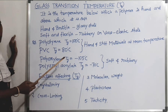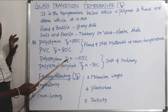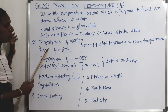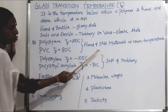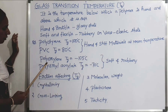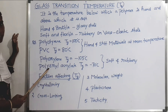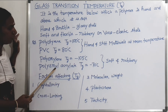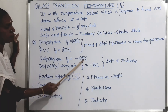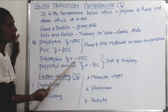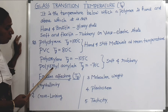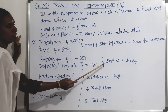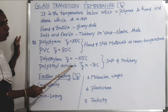The glass transition temperature decides whether a polymer behaves as a hard material or soft material. Polystyrene and PVC are denoted as hard and stiff materials. The next examples are polyethylene and polyethyl acrylate, which are low density polymers. For polyethylene, the Tg value is minus 105 degrees centigrade, and for polyethyl acrylate, minus 70 degrees centigrade. Based on these Tg values, these polymers are denoted as soft and rubbery materials.